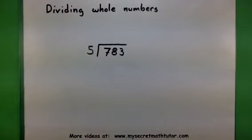It's going to be special because 5 will not divide into 783 evenly. So we're going to have to deal with a remainder in the end.